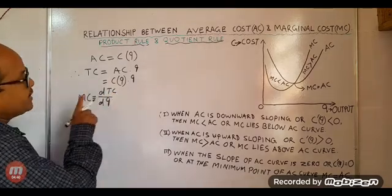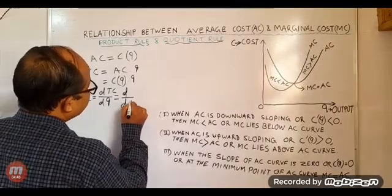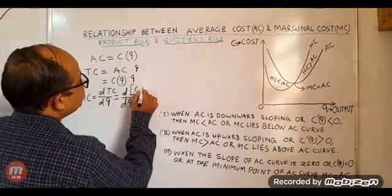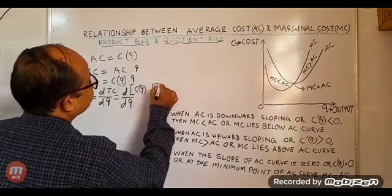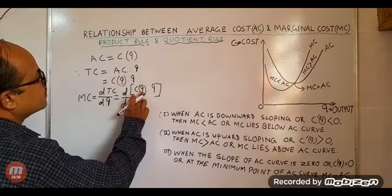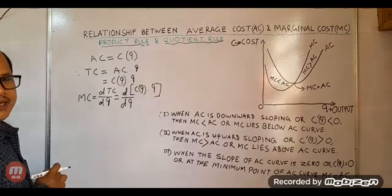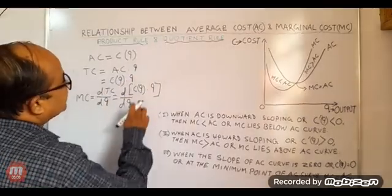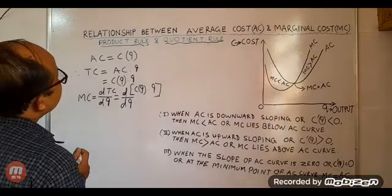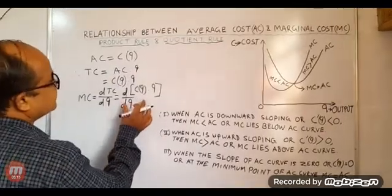So MC = dTC/dQ = d/dQ of [C(Q) · Q]. This function is a product of two things: C(Q) and Q. Considering these two as separate functions, we apply the product rule of differentiation to solve it.